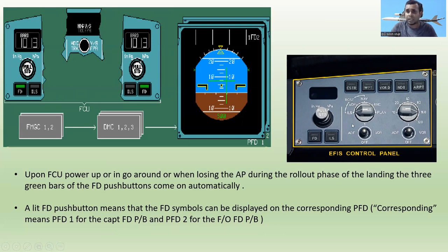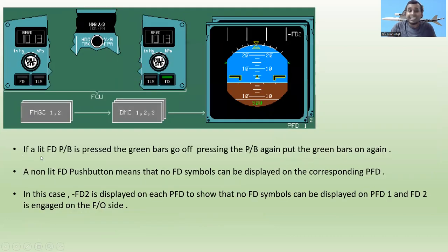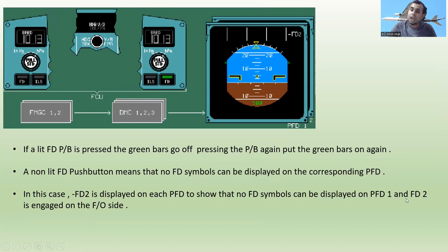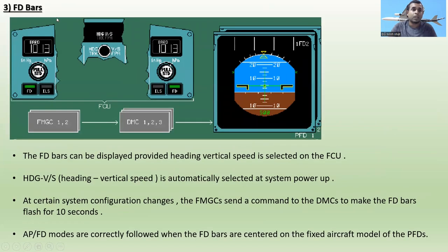This is the flight control panel with ILS, rose, arc, and plan modes. If a lit flight director push button is pressed, the green bars go off. Pressing the push button again puts the green bars back on. A non-lit flight director push button means that no flight director symbols can be displayed on the corresponding PFD. In this case, '-FD2' is displayed on each PFD to show that no FD symbols can be shown on PFD1, and FD2 is engaged on the first officer's side.